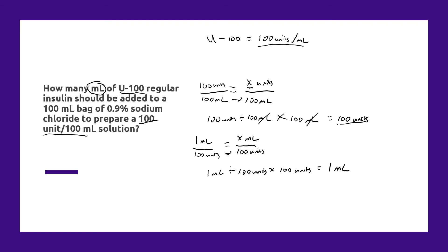Now you may be wondering, technically if you added 1 milliliter to a 100 milliliter bag, you're actually going to have 101 milliliters. You could take 1 milliliter out of that 100 milliliter bag prior to adding the insulin to have precisely 100 units per 100 mL.